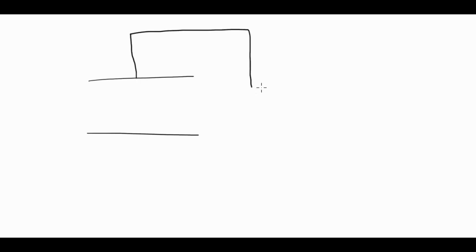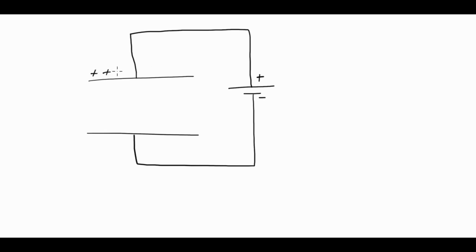If we take two metal plates and hook them up to a supply — with the positive end connected to the top plate and the negative side to the bottom plate — then the top plate is going to become positively charged and the bottom plate is going to become negatively charged. As a result we are going to get electric field lines occurring between the plates, and electric field lines are always drawn from positive to negative.